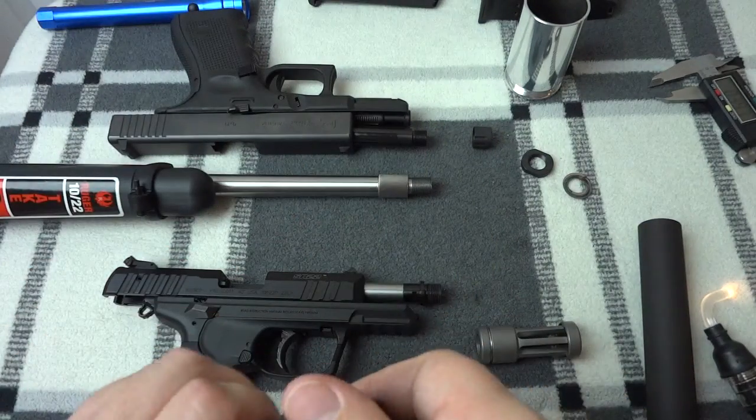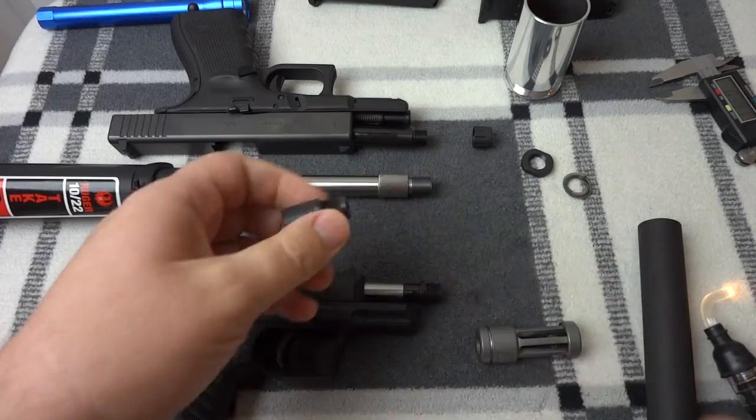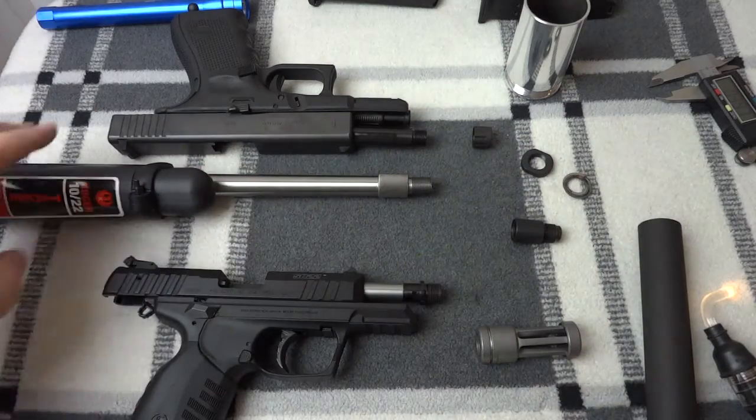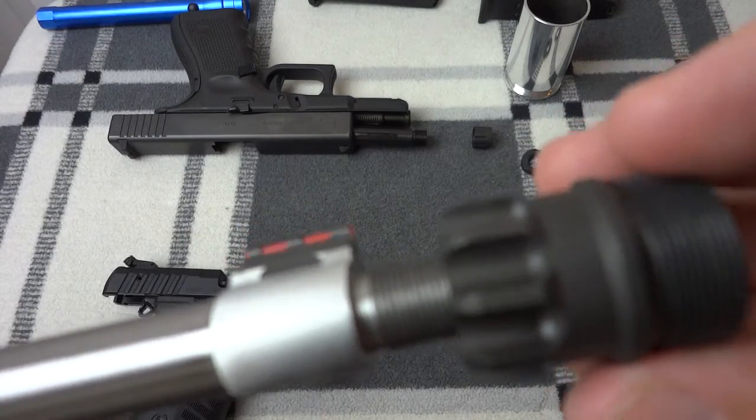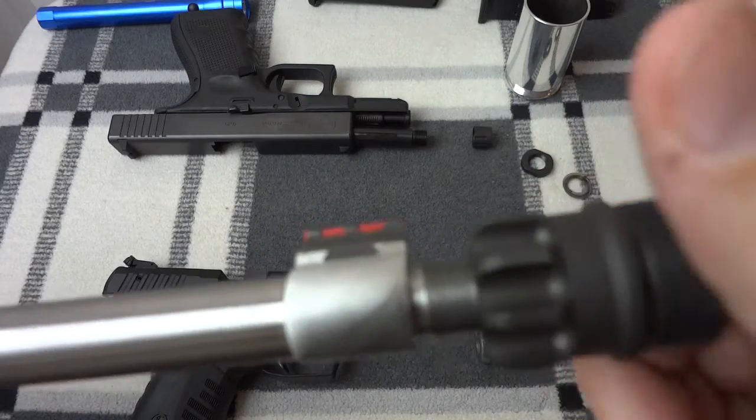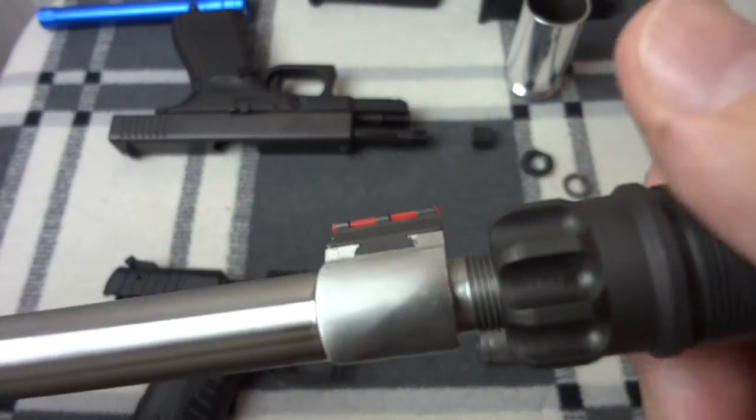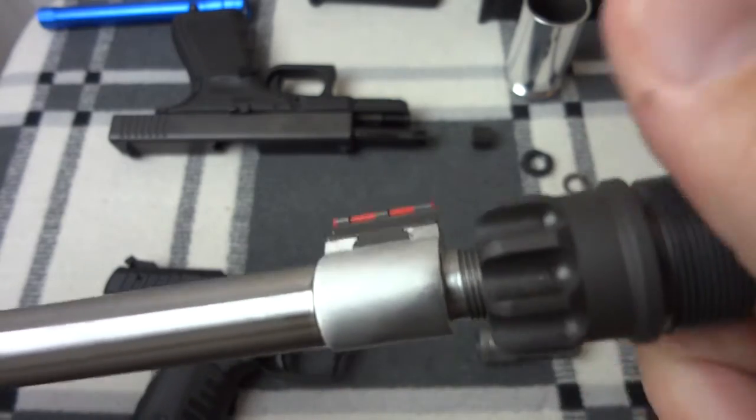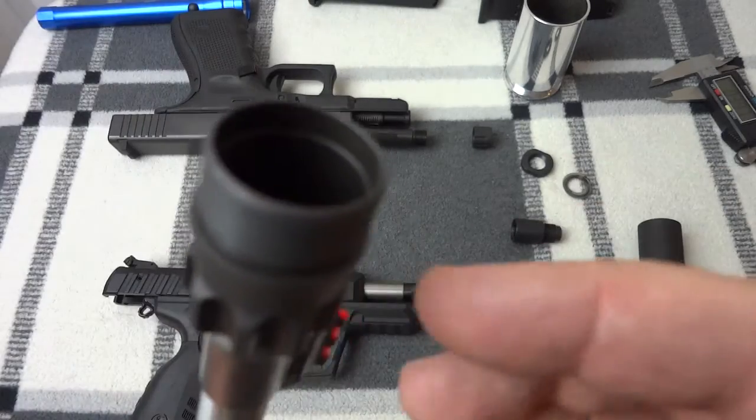So herein lies the problem. Not all guns are created equal. Ruger threads their 10/22 threaded barrels at a longer thread length. And I won't screw it all the way on because I'll screw up the o-ring if I do that. But notice as I'm screwing, wait until I get resistance. I get resistance right about there. I'll show you why.